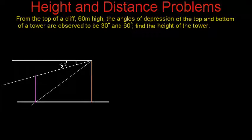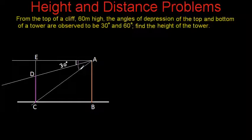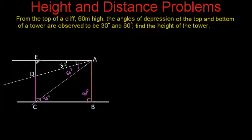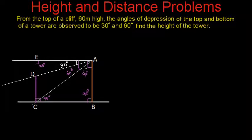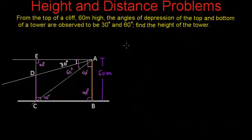The first construction we have to do is draw a line from the top of the tower to the horizontal line. Now let us name all these points. The angle of depression to the bottom of the tower is 60 degrees. This angle is 90 degrees, and this angle is also 90 degrees. We are provided with the height of the cliff, so the distance AB is equal to 60 meters. We have to find the height of the tower, which is DC.